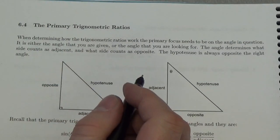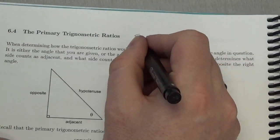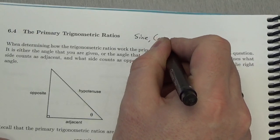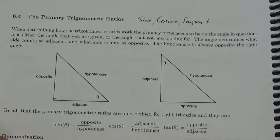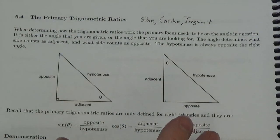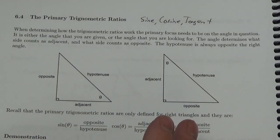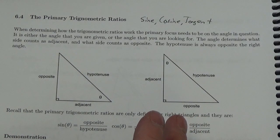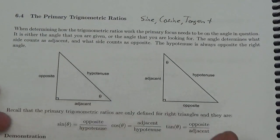In this lesson, we're going to take a look at the primary trigonometric ratios — sine, cosine, and tangent. The expectation is that you have seen these before, and we're just going to review them a little bit here. Where we're going to take basic trig further will be in later lessons, where we do multiple triangle problems and three-dimensional problems. But for right now, we just want to quickly review this.